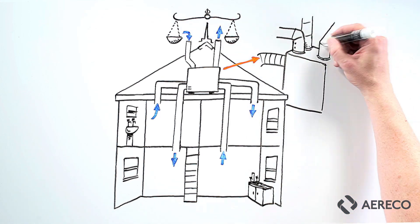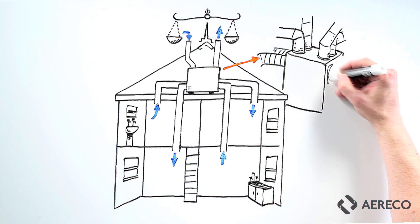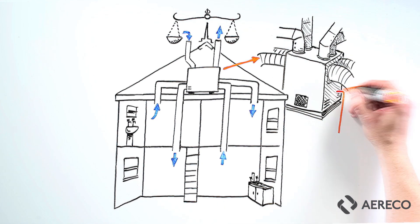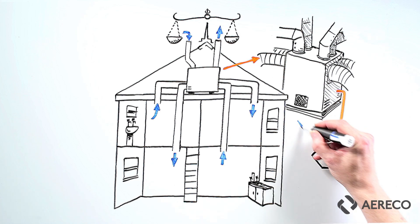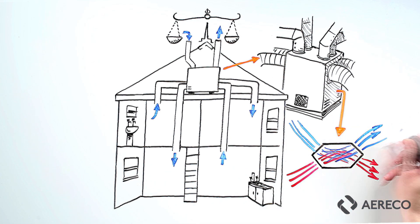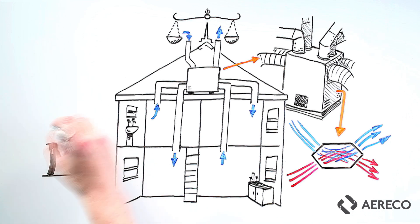An MVHR system is designed to not only provide good indoor air quality like the others, but it's also designed to recover heat that would otherwise be lost through ventilation. It does this by passing the stale warm air it is extracting past the cold fresh air it is supplying. This warms the incoming air up. It does this in a heat exchanger within the fan unit.